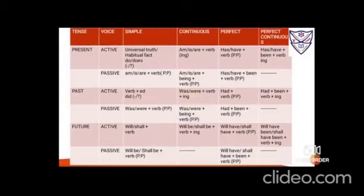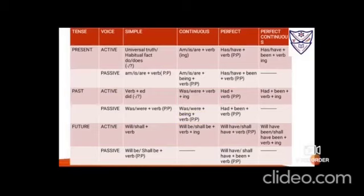In past continuous active voice, the helping verbs are 'was' and 'were', and the main verb is used in its -ing form. In passive voice, 'was' and 'were' remain the same as per the need of the object. The -ing is given to 'be', changing it to 'being', and the main verb comes in its past participle (third) form.